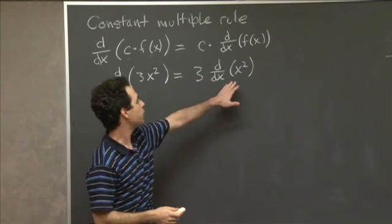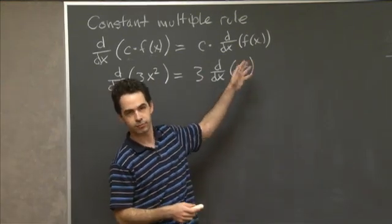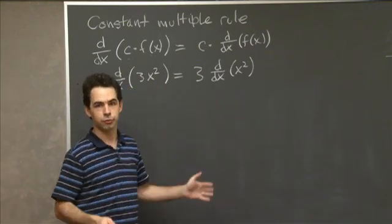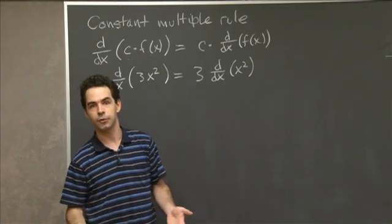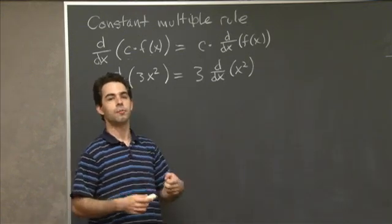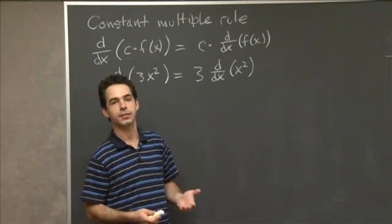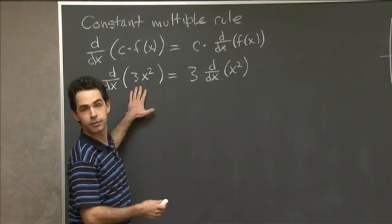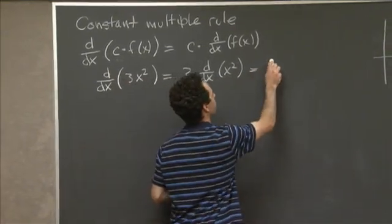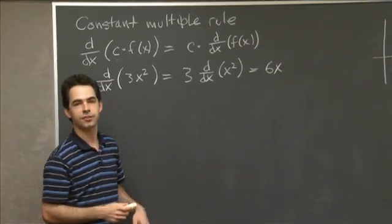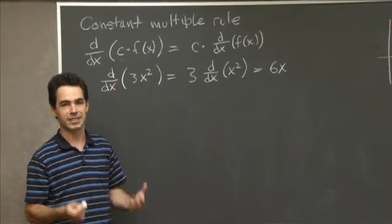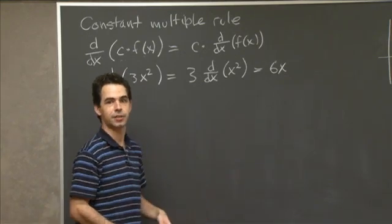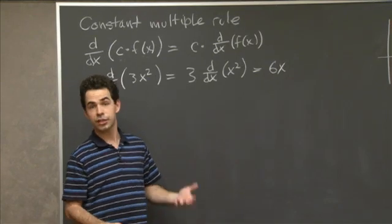Now this is good because we already have a rule for computing derivatives of powers of x. So this says we don't need a special rule for computing multiples of powers of x squared. We don't need to go back to the limit definition to compute the derivative of 3x squared. We can just use the fact that we know the derivative of x squared in order to compute the derivative of 3x squared. So in this case, that would work out to 6x. It simplifies the number of different computations we have to do. It reduces the number of times we need to go back to the limit definition.